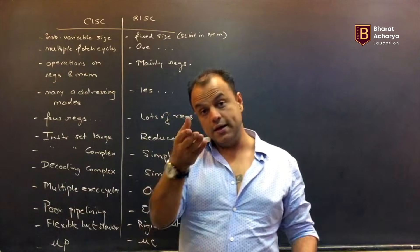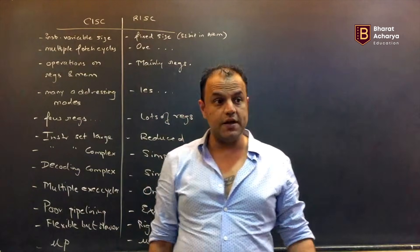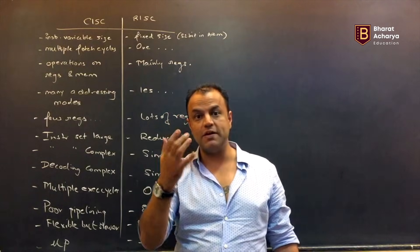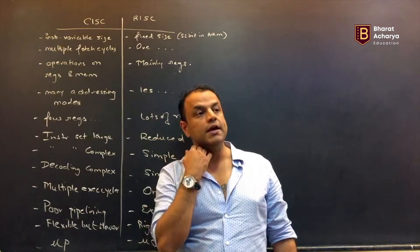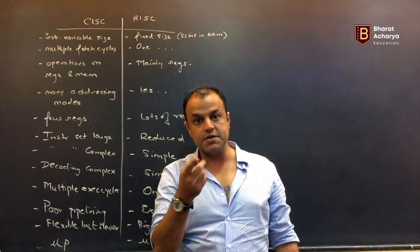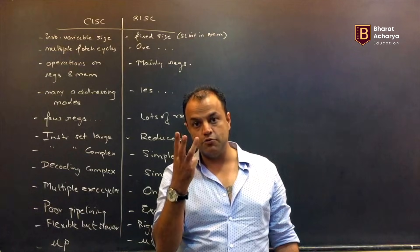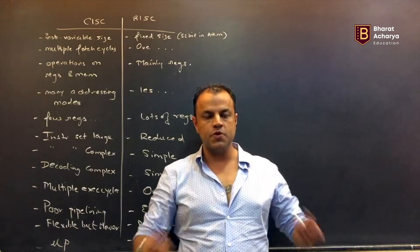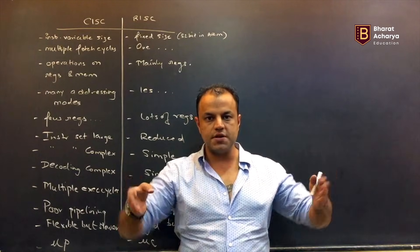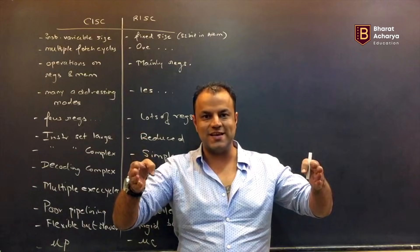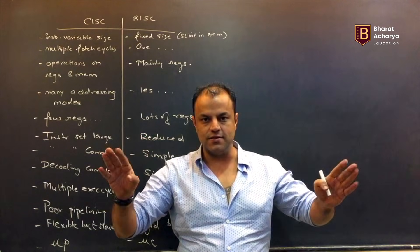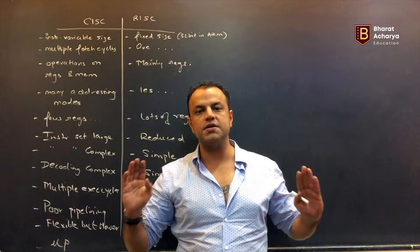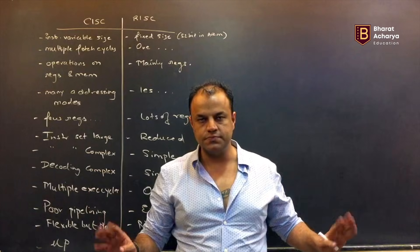Think of 8086 — instructions could be 1-byte, 2-byte, 4-byte, 5-byte, 6-byte. In 8051, instructions can be 1-byte, 2-byte, 3-byte. In a RISC processor, all instructions are one size. That's it. In ARM7, all instructions are 32-bit. Simple.